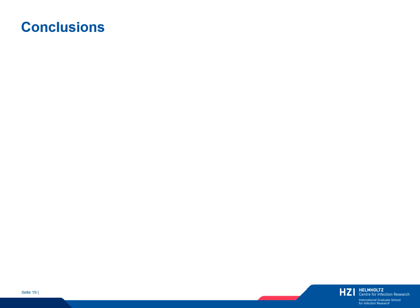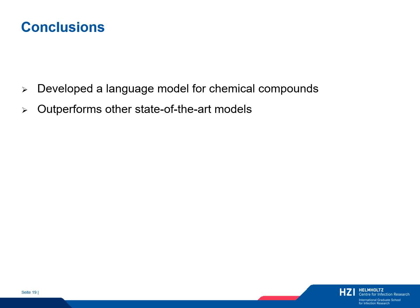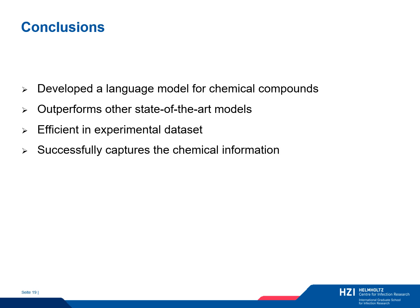In conclusion, we have developed a language processing approach for molecular property prediction. Our model is based on Transformers, a deep learning architecture ideal for sequence processing. Thanks to that, we are able to outperform other state-of-the-art models on standard evaluation datasets. In addition, we show that our model performs very well on small datasets of experimental compounds targeting Pseudomonas aeruginosa. Last but not least, we show that ChemLM encodes the chemical information in a meaningful way.